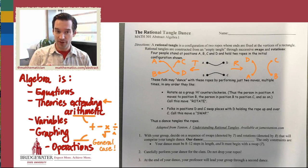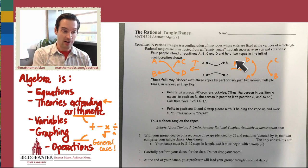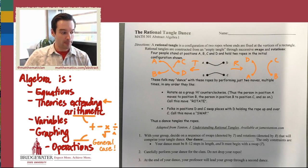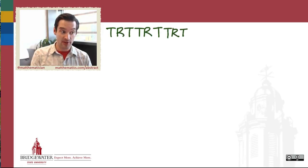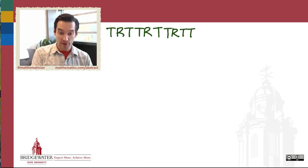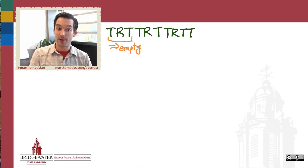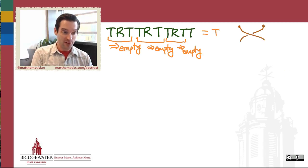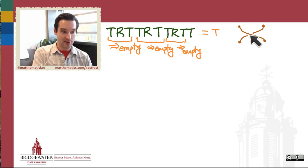So I had you all do the rational tangle dance — come up with a series of Ts and Rs, a series of twists and rotates that will create a tangle. The first group came up with TRT, TRT, TRTT. What we observed as they did this dance was that by step three, the rational tangle in their hands was back to step zero. So TRT left us with an empty tangle again, and it happened a second and third time. The net result of this first dance was just a single twist — not a very interesting tangle, even after doing ten steps.